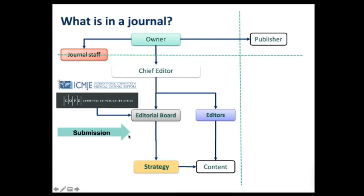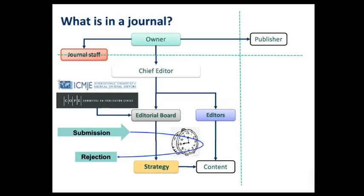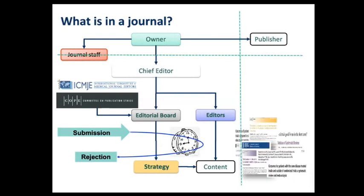When you submit your paper, it goes through an assessment according to the journal's strategy, and 90 percent of the time it will be rejected. The rejection rate in most journals — even those of medium quality — is around 80 to 90 percent. The 10 percent that are accepted become publications, which are put together on a website with PDF files — and this is called a journal.